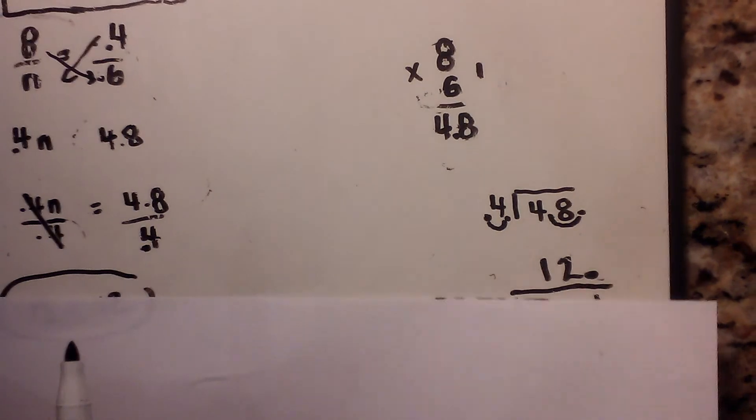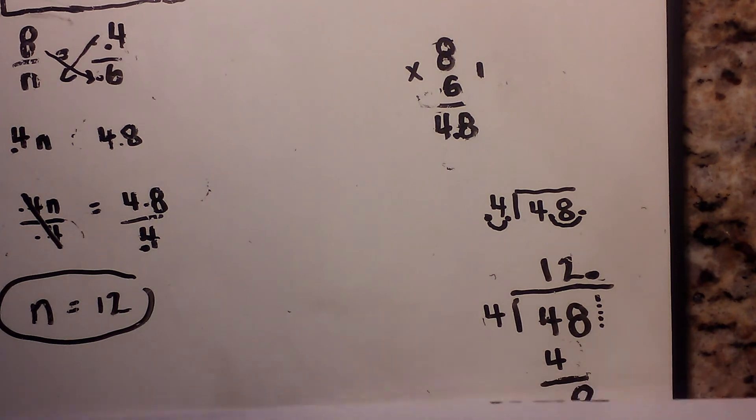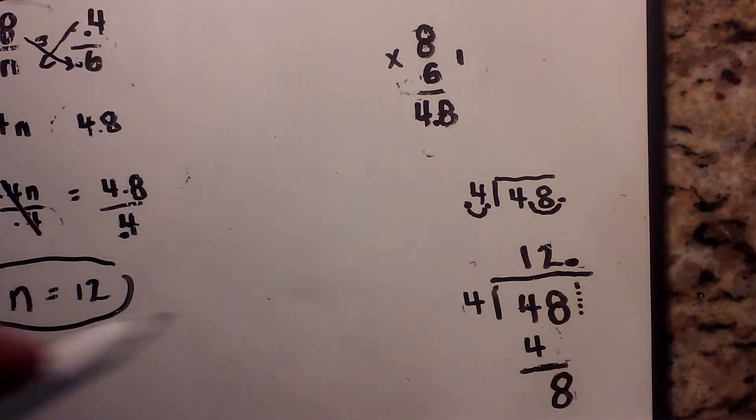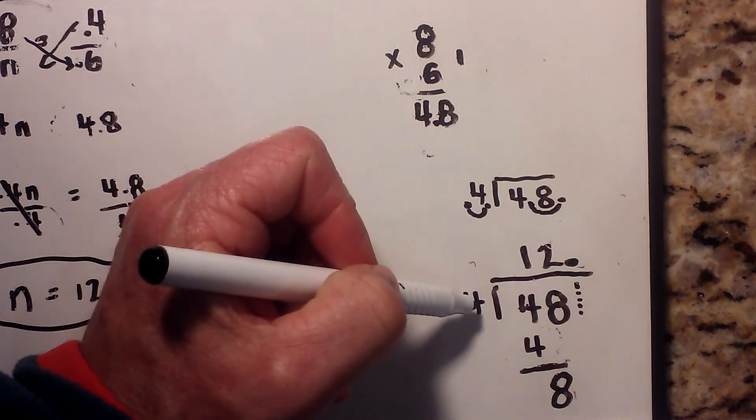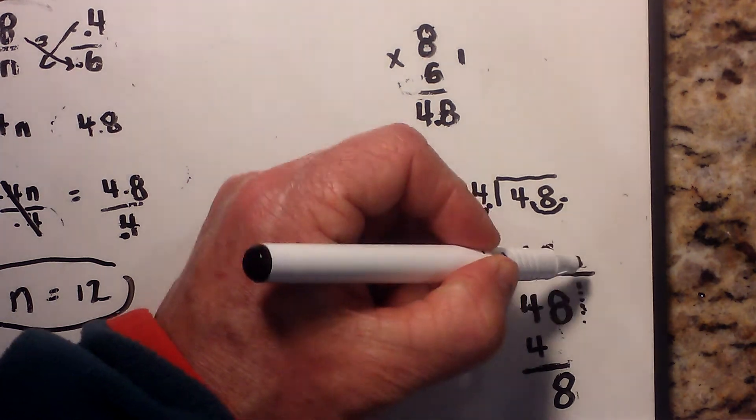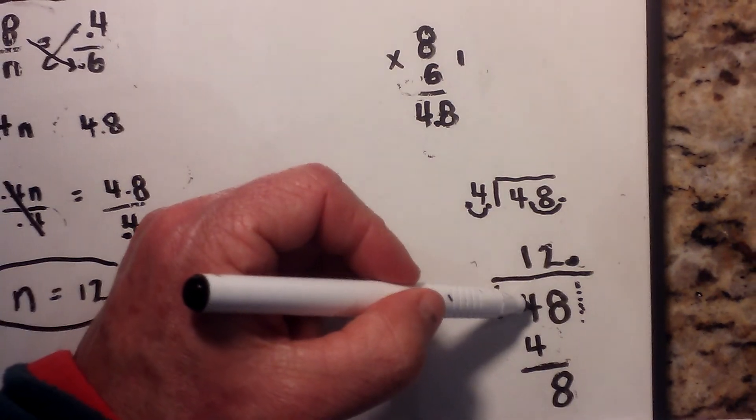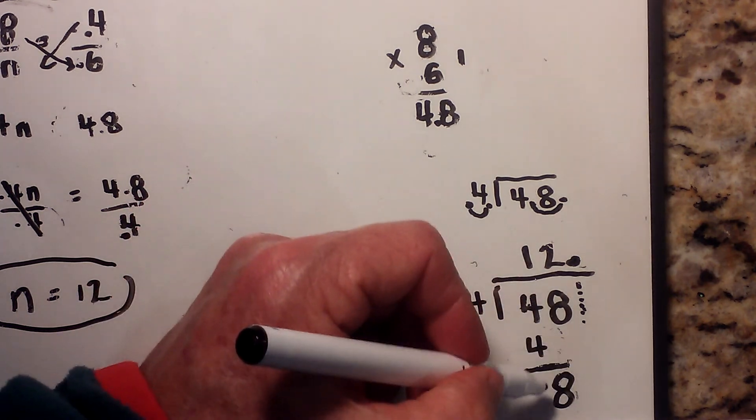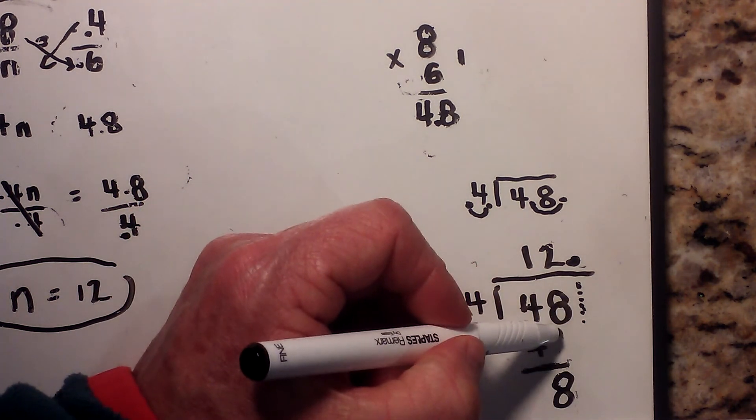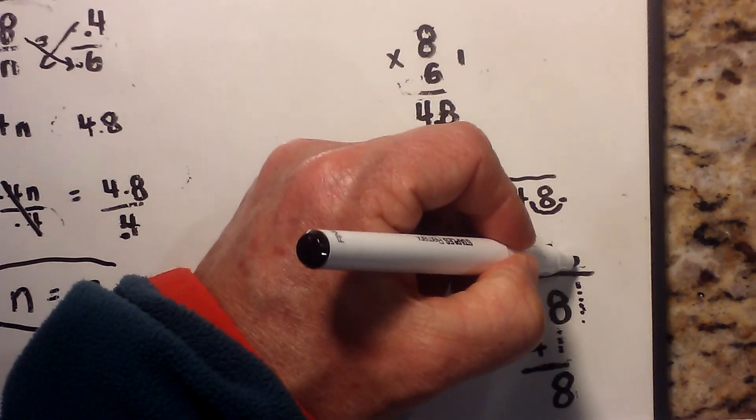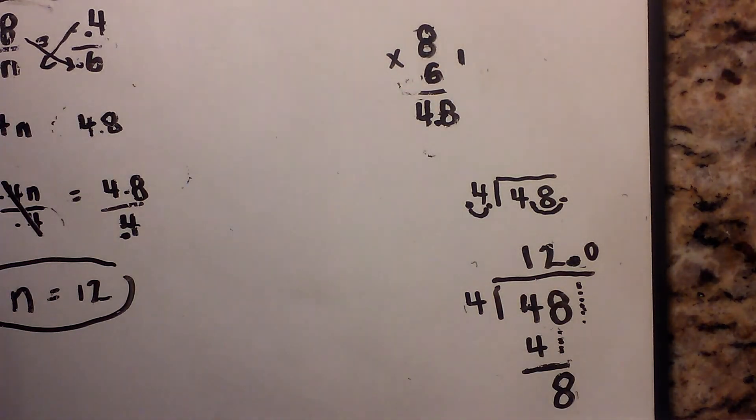Okay, you are left with 4 into 48. Now remember your decimal is here so I'm just going to move the decimal up. So 4 goes into 4 one time, 1 times 4 is 4. This is actually 0. I'm just going to bring the 8 down. 4 goes into 8 two times. Remember here is your decimal and that becomes 12.